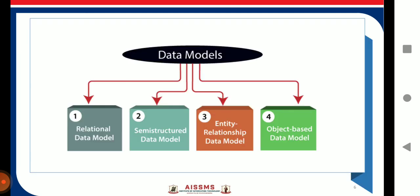So here we can have the data models which are widely used. The first one is a relational data model. This type of model designs the data in the form of rows and columns within a table in a tabular format. Thus a relational model uses tables for representing data and in between relationships. Tables are also called as relations. Relations are nothing but the tables.